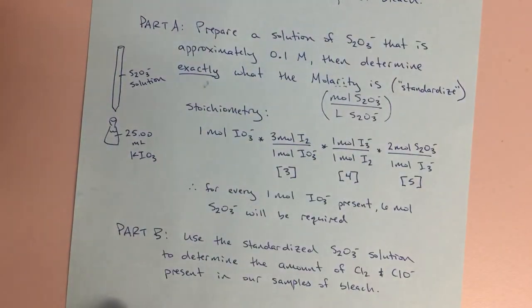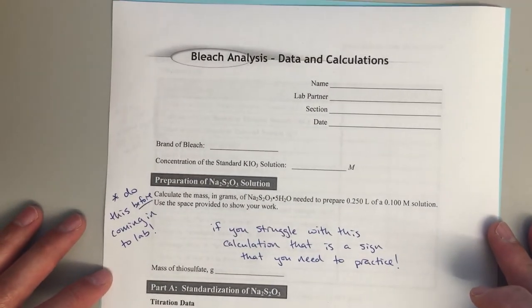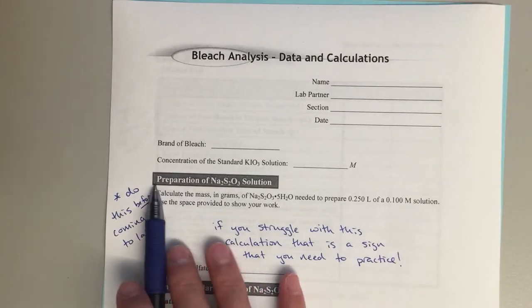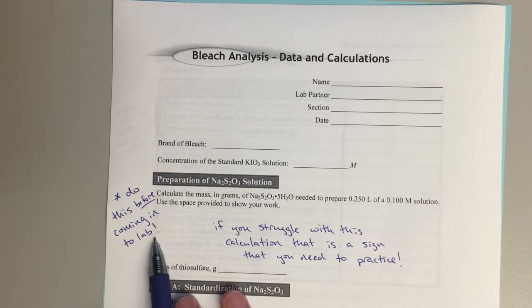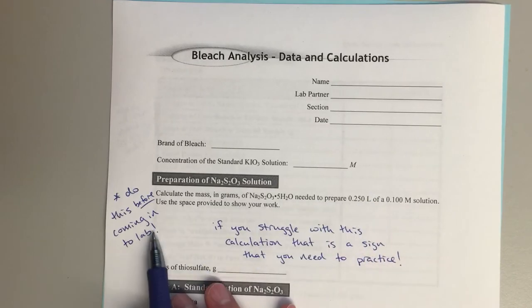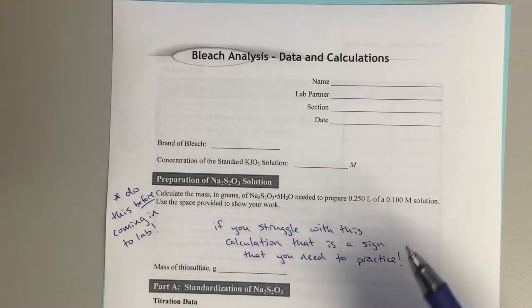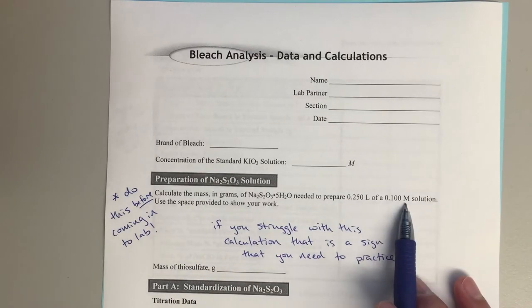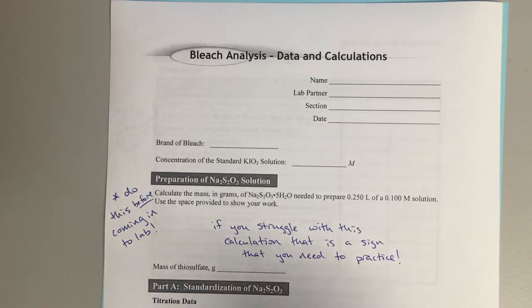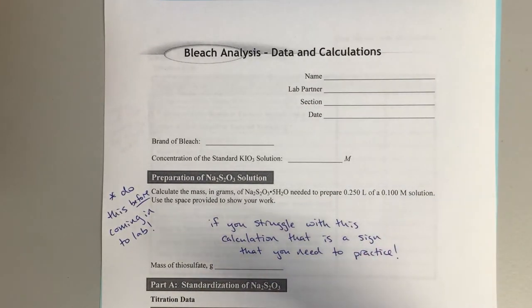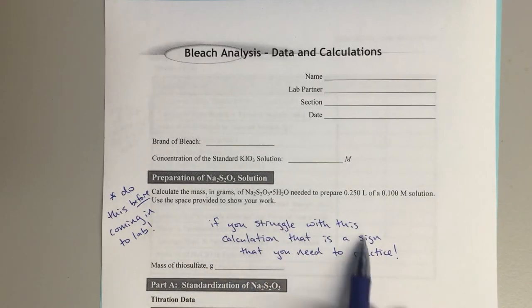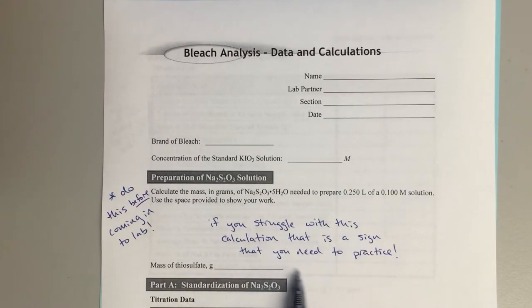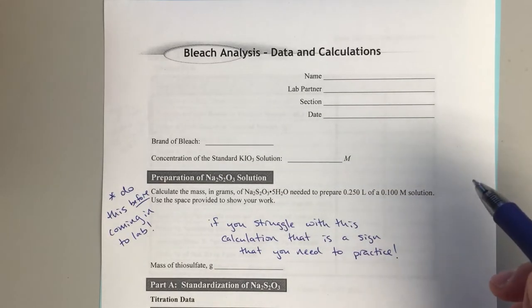Okay, almost done. The last thing I want to talk about briefly is the data and calculations page. This first calculation — figuring out the mass of thiosulfate you need to weigh out to make your approximately 0.1 molar solution — you can do this before you come into lab. It's pretty straightforward. That way, when you get to lab, it will make your experience much better. If you're struggling with this calculation, that's a sign you need to practice and brush up on this material.